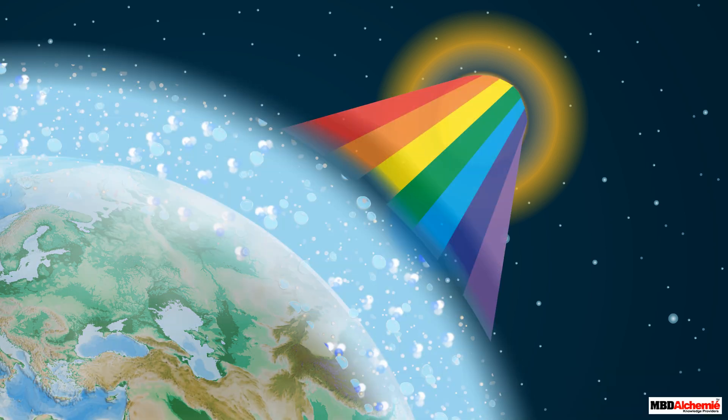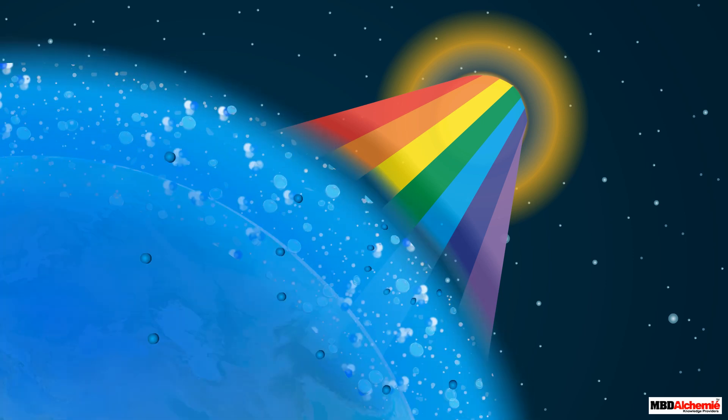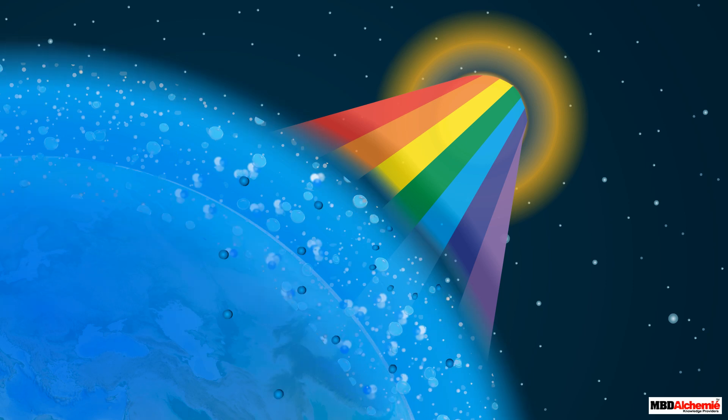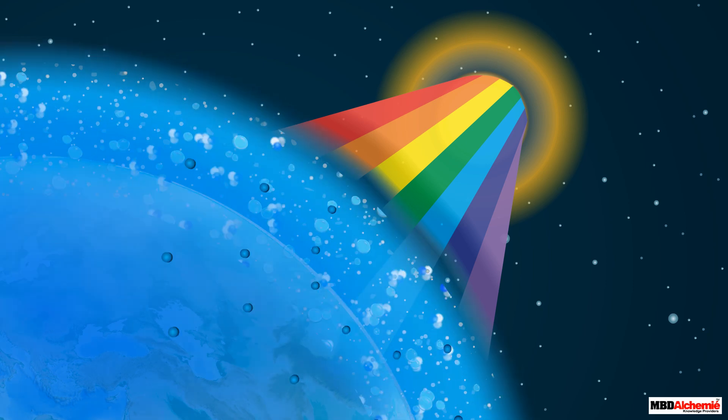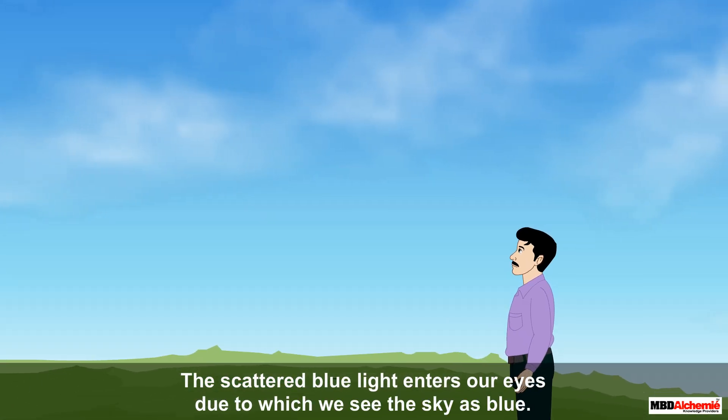Thus, when sunlight passes through the atmosphere, the fine particles in the air scatter the blue color of shorter wavelengths more strongly than the red color of longer wavelengths. The scattered blue light enters our eyes, due to which we see the sky as blue.